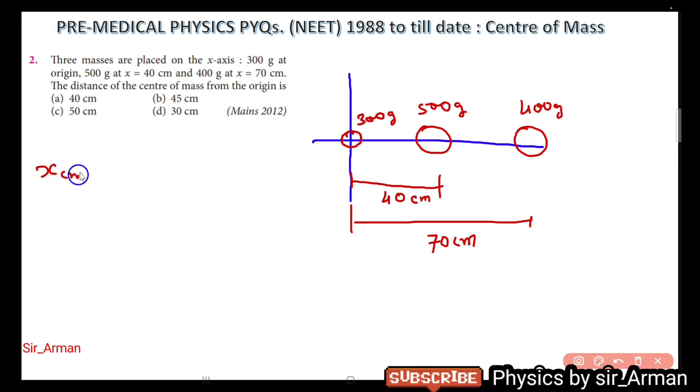So what is the formula? We have x_cm equals m1·x1 plus m2·x2 plus m3·x3 divided by m1 plus m2 plus m3. Now just put the data. It is given m1 is 300 grams.